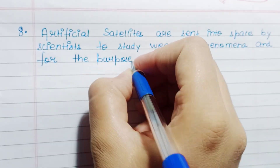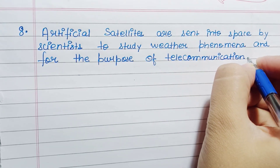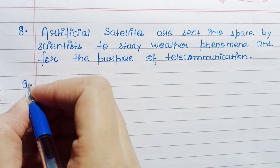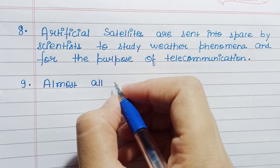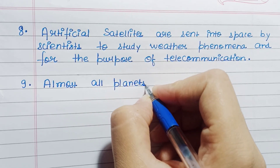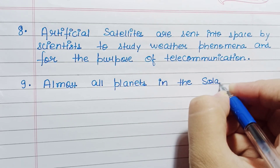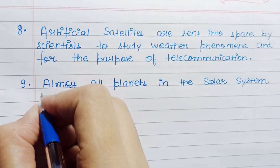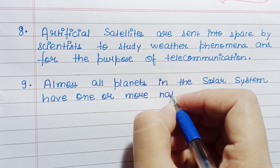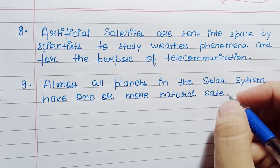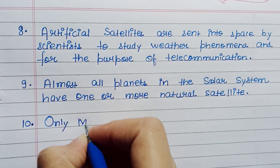Artificial satellites are sent into space by scientists to study weather phenomena and for the purpose of telecommunication. Almost all planets in the solar system have one or more natural satellite.